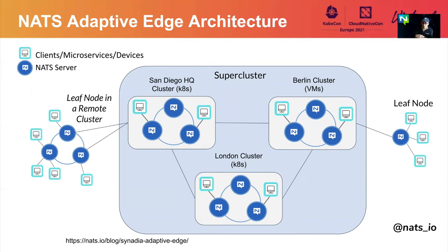All three building blocks — the NATS server, super cluster, gateways, and leaf nodes — can be used to map into your architecture or the needs of your organization.